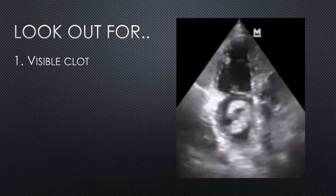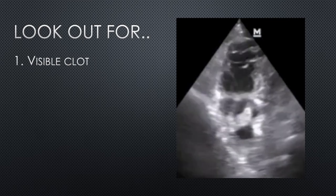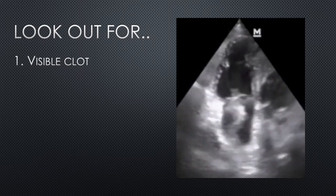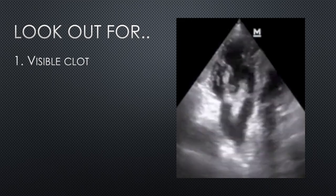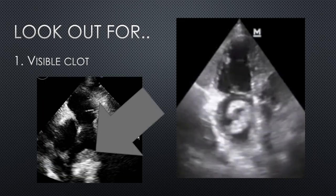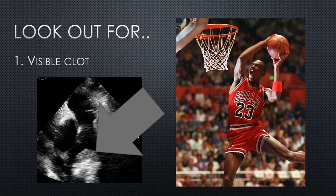Next, there are a couple of things to keep an eye out for. Firstly, a visible clot. In this video we can see a sausage-shaped clot desperately trying to escape from the right atrium. And in this still image we can see a saddle embolus just sitting here at the bifurcation of the pulmonary artery into the main pulmonary arteries. If you see one of those, that's really a slam dunk.